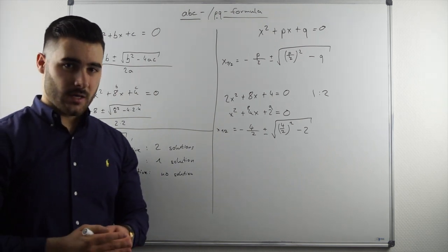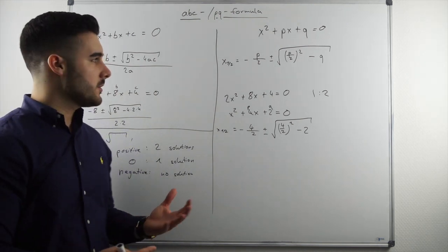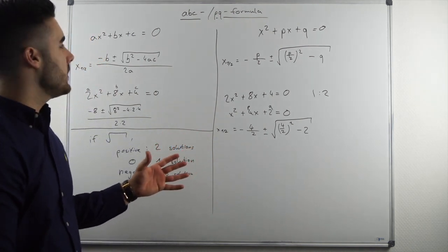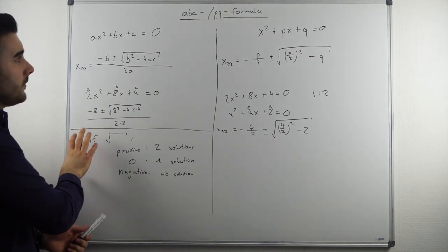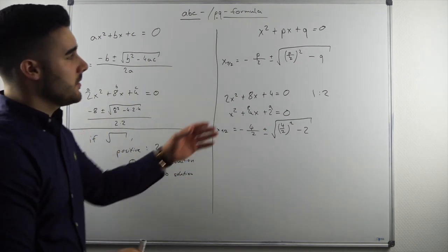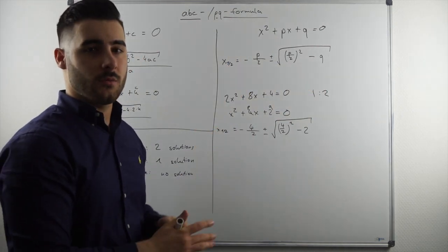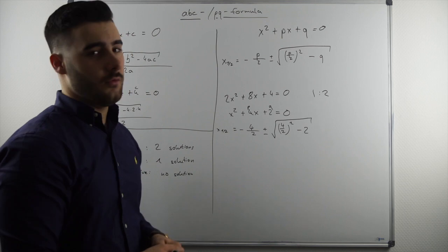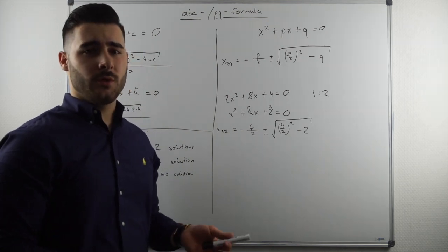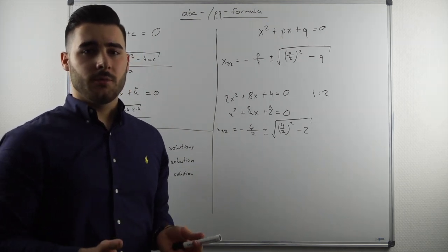And as I already stated now, by explaining those two, the main difference is basically, you're using the general form of functions with the ABC formula and you use a simplified function, so the PQ function as you would say now for the PQ formula. However, which one you use is completely up to you.